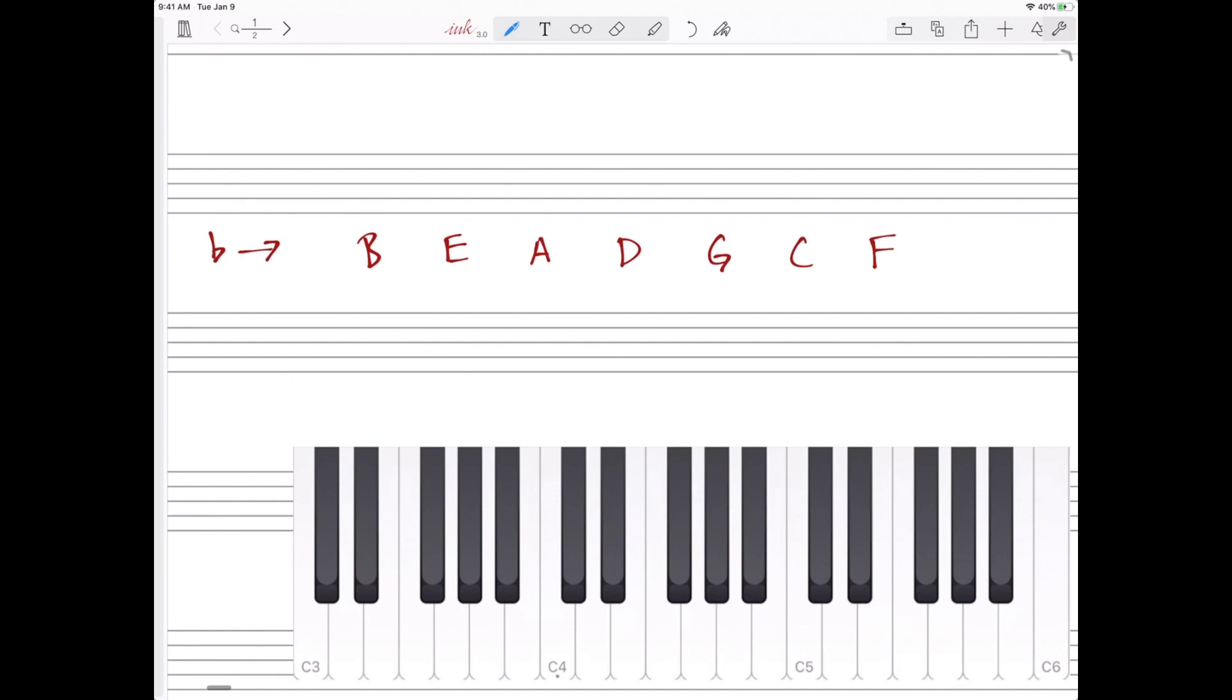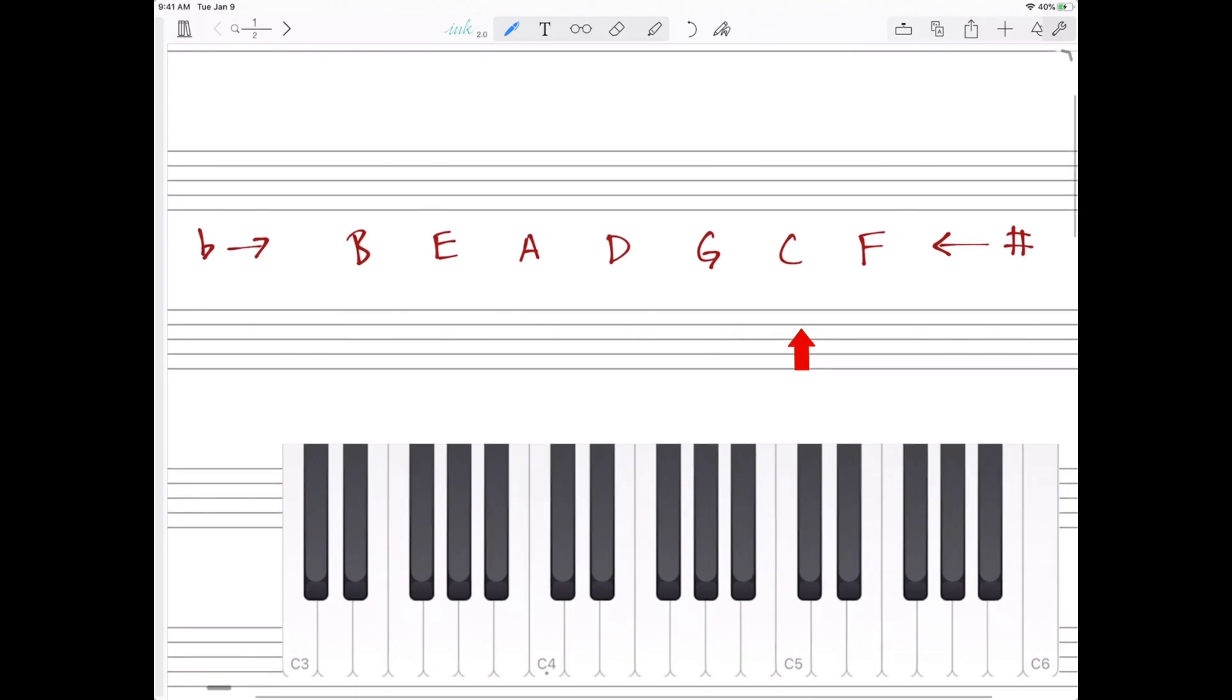The order of sharps starts with the F. Let's work with sharps. The key of C has no sharps and no flats. The key of G has one sharp, and that sharp happens to be F sharp.